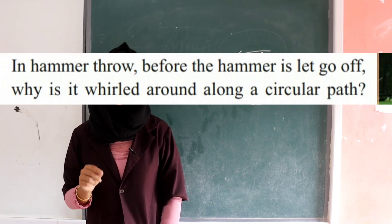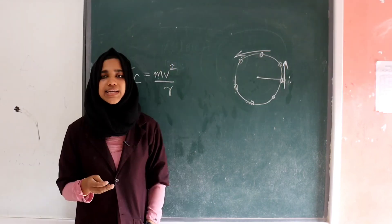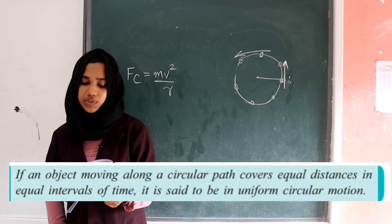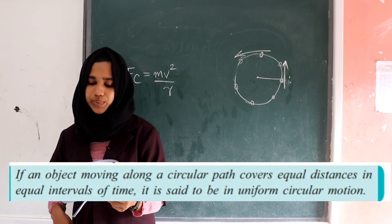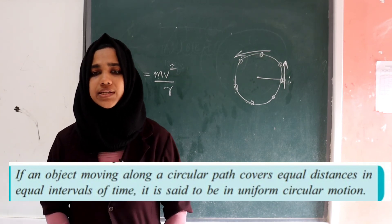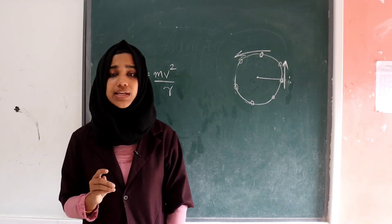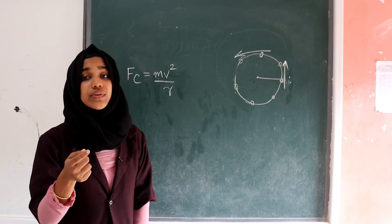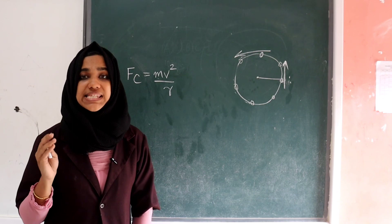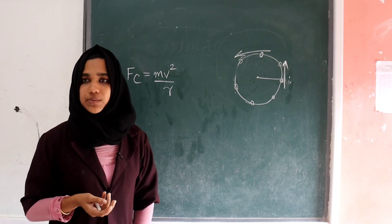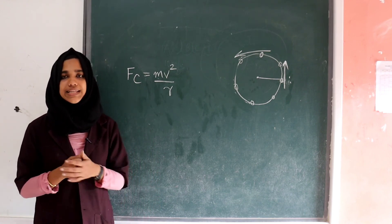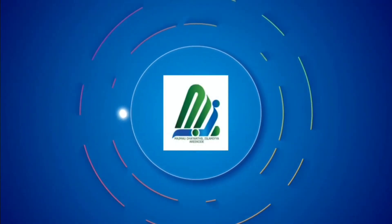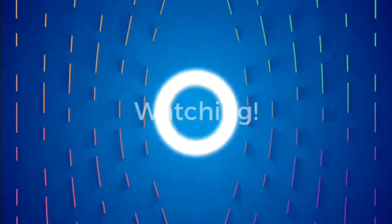If an object moving along a circular path covers equal distances in equal intervals of time, it is said to be in uniform circular motion. Examples include the motion of a fan and the motion of the second hand of a clock. That completes today's class — please complete your notes. Thank you.